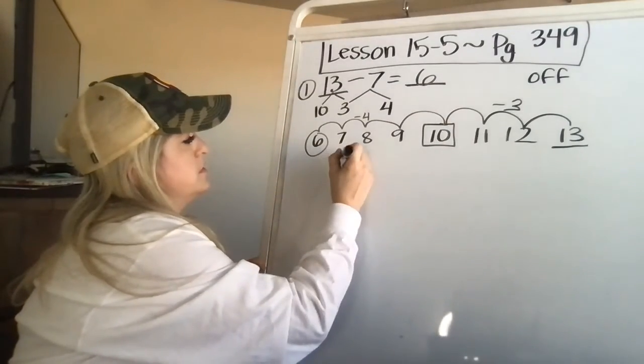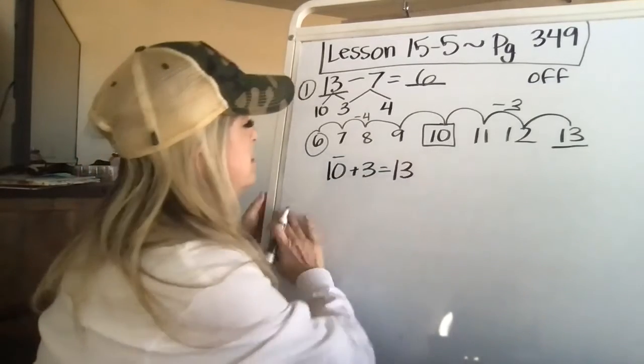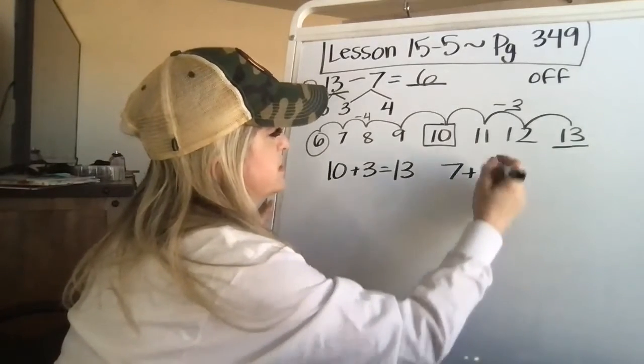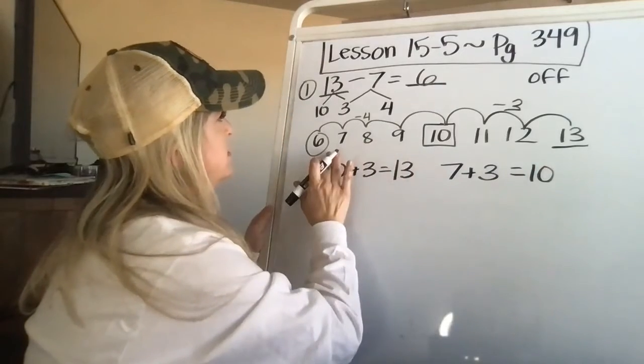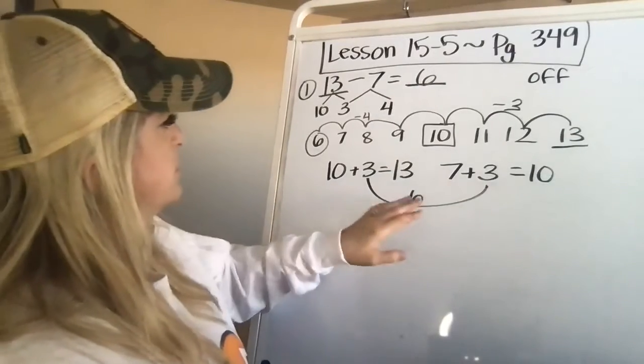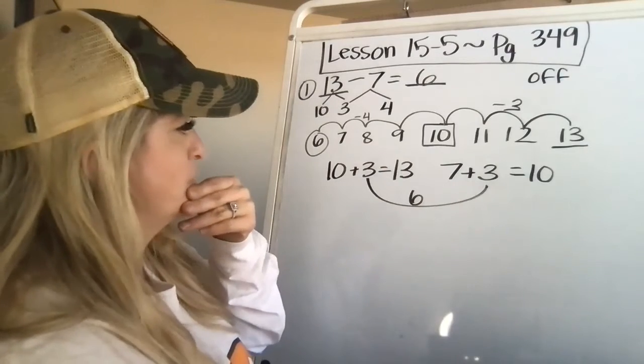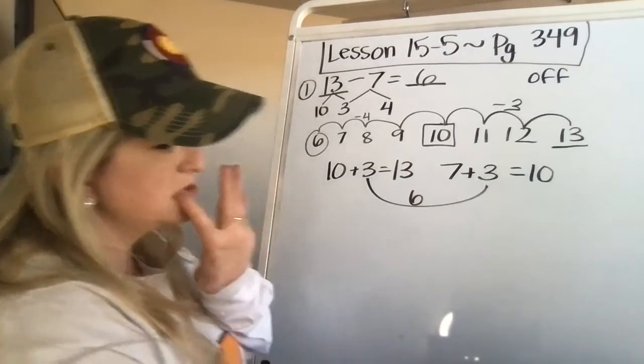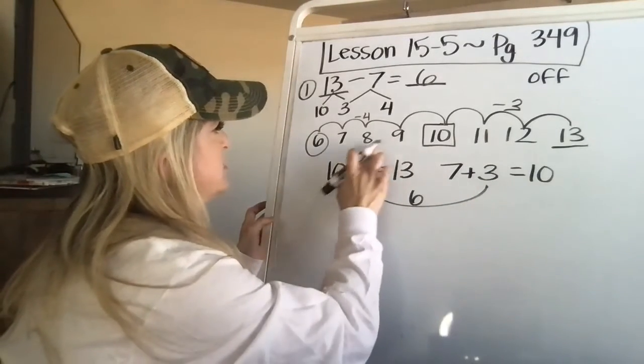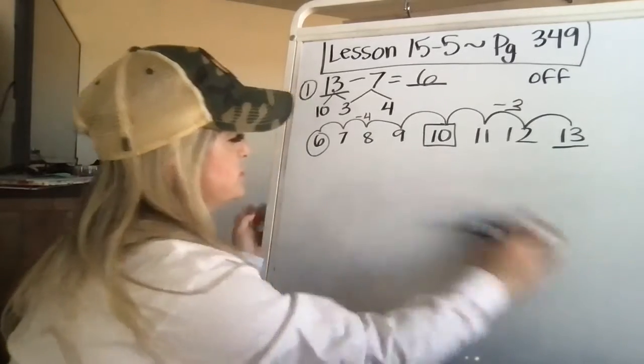So if you know, if you know 10 plus three is 13 and then, you know, seven plus 10. Oops. I'm sorry. That's not right. Seven plus three is 10. You have six. You took six away and you landed on, wait, hold on. I'm sorry. I was trying to teach you something new. Maybe this is not the time to do it. Okay.